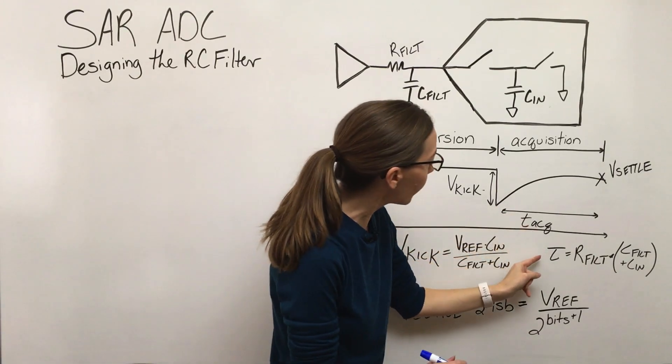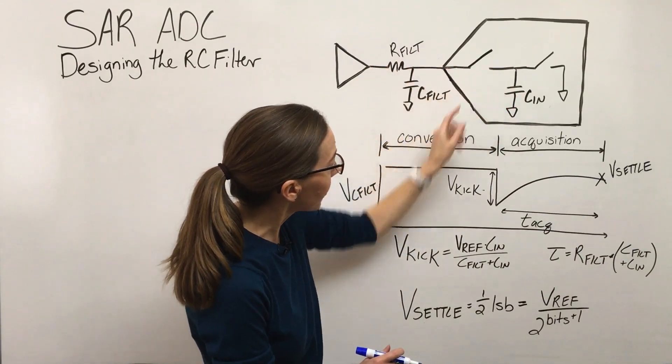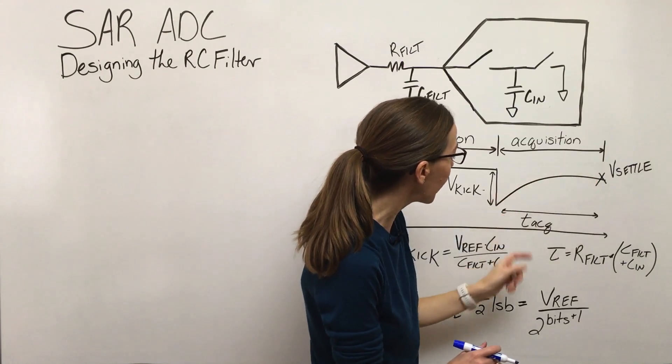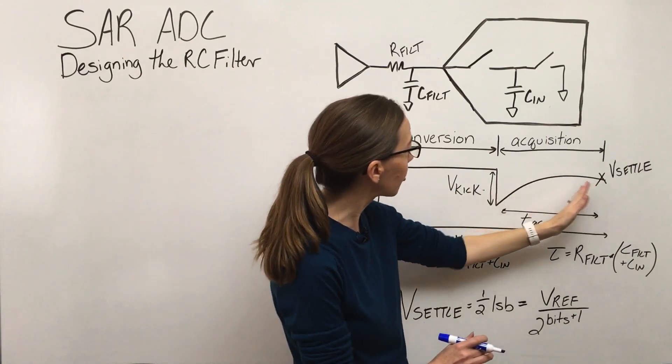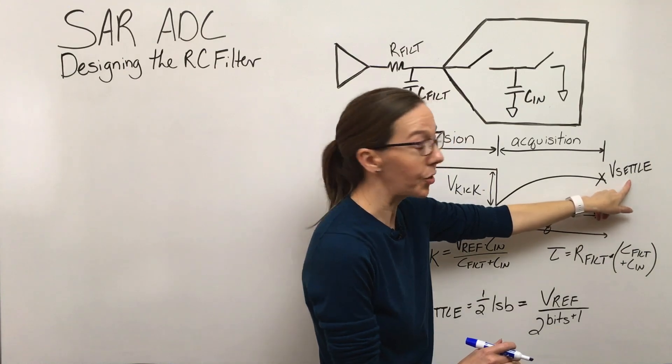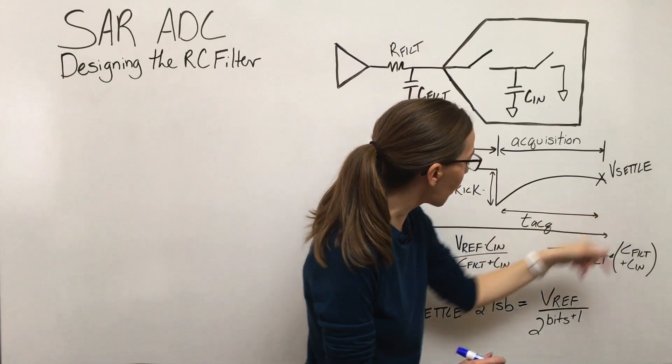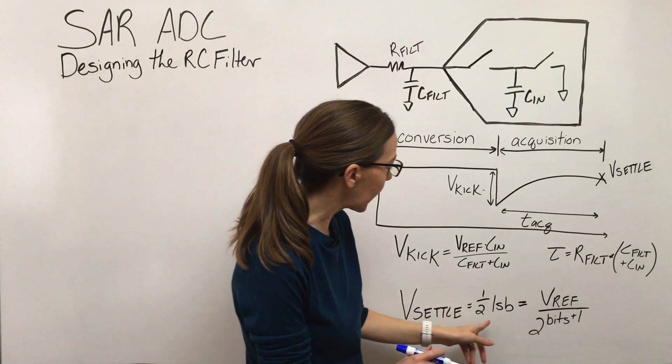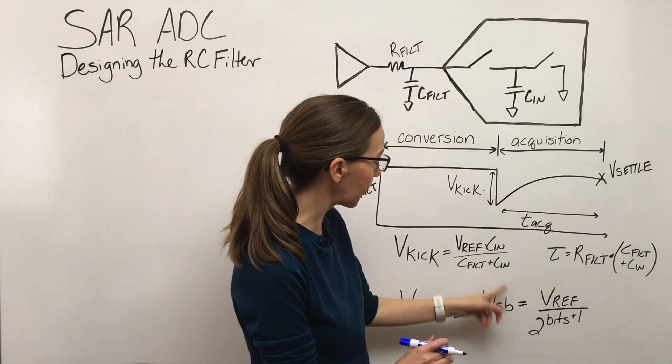And we've talked about the time constant of this overall RC filter that will help us understand how this decays over time. And then one more thing to add is the voltage that we need it to settle to at the end before this acquisition time ends. So a good rule of thumb that we use is we want it to settle within a half an LSB of the resolution of this ADC.